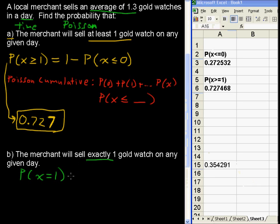That equals 0.354. There you go. A little example of using the Poisson probability distribution with Excel.